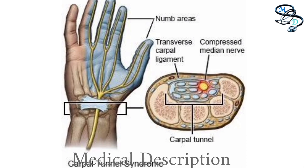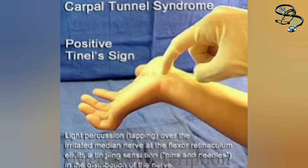Anything that squeezes or irritates the median nerve in the carpal tunnel space may lead to carpal tunnel syndrome. A wrist fracture can narrow the carpal tunnel and irritate the nerve, as can the swelling and inflammation caused by rheumatoid arthritis. Many times there is no single cause — it may be a combination of risk factors that contributes to development of the condition.